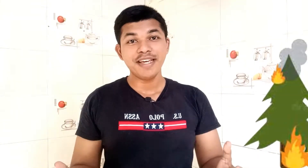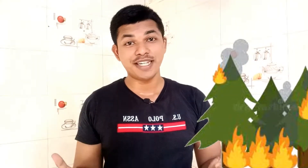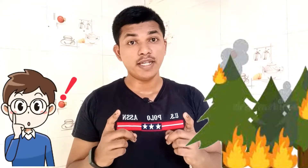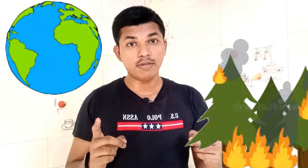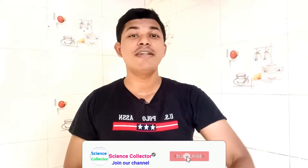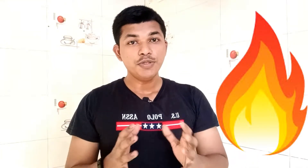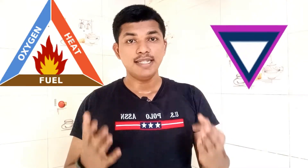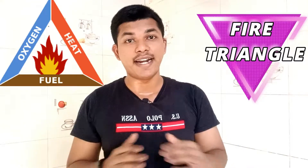Hello viewers, you may hear about forest fire in news channels, but do you know forest fire is a critical problem to the entire world? Let's get into this video. Usually there are three elements needed to form any type of fire: oxygen, heat, and fuel. These three elements are known as the fire triangle. These three elements are available abundantly in the forest — the trees act as fuel.